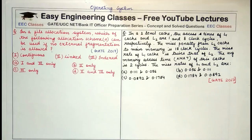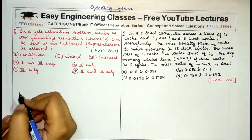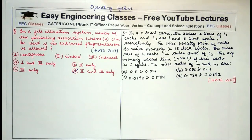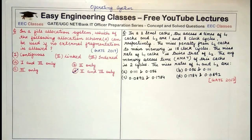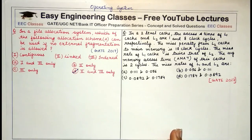For those not clear with external fragmentation: it occurs when the total amount of free memory is equal to or greater than the amount required by a process, but these chunks of memory are not contiguous. So this memory cannot be allocated to a process. Linked and indexed allocation schemes do not suffer from this drawback — in linked allocation, each file is a linked list of disk blocks that can be scattered anywhere.